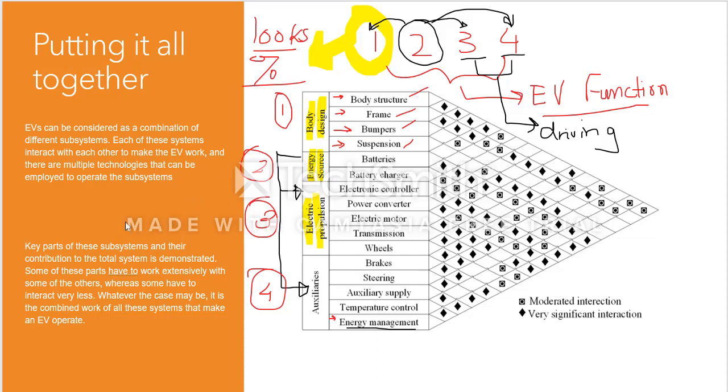The key parts of the subsystem contribute to the total system—one, two, three, and four. All of these are working together in order to make the EV function. Now, before I go on to the next slide, what's really happening on my YouTube is that whenever someone uses the term electric vehicle, people have been thinking of cars such as Tesla.